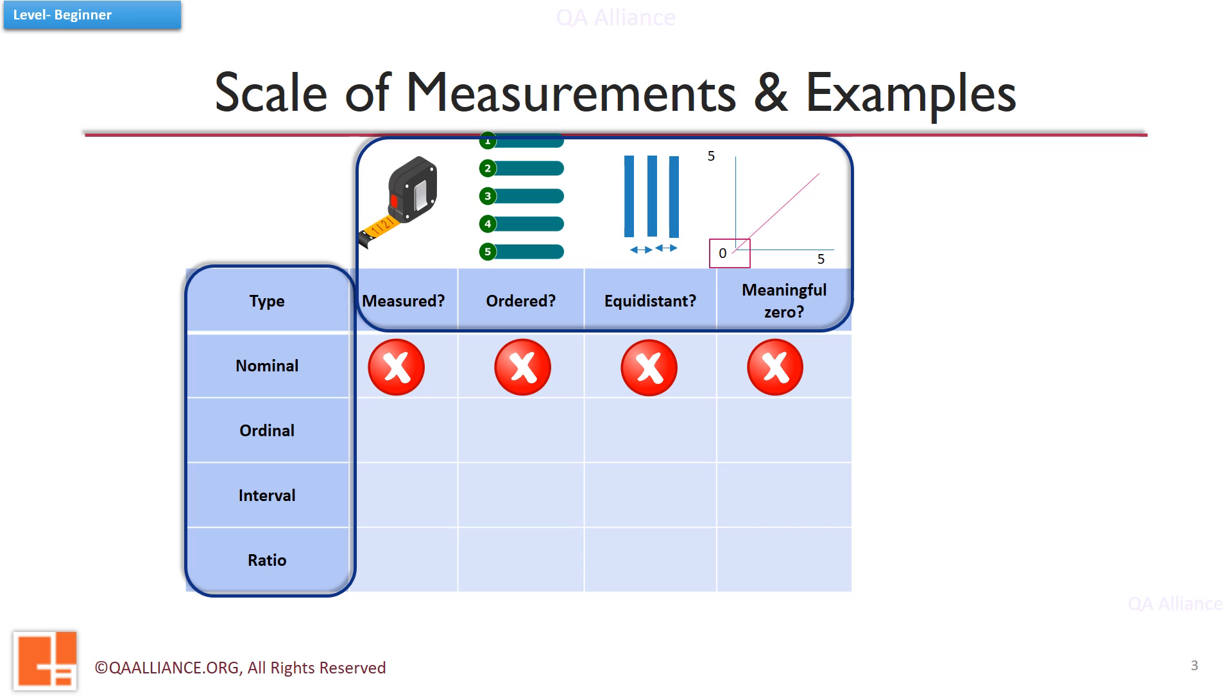In case of nominal data, the data cannot be arranged in an ordering scheme, it is not measured, it can be counted. There is no significance in interpreting the distance between two data values and there is no absolute zero. Examples of this type of data include gender (male-female), nationality (Indian, American, etc.), type of occupation (daily wages, software professional, government employee, etc.).